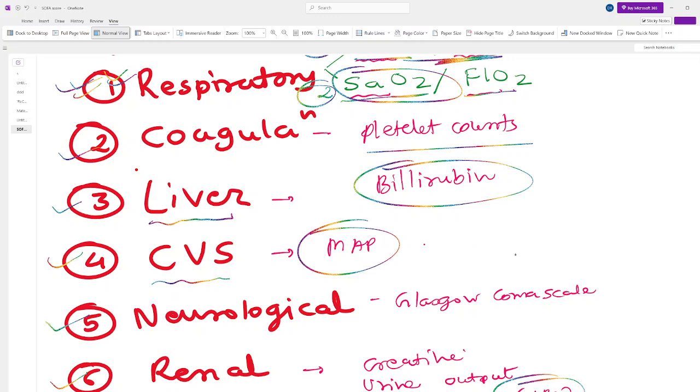For CVS we need to have mean arterial pressure. Mean arterial pressure is calculated by the equation from the systolic blood pressure and diastolic blood pressure.